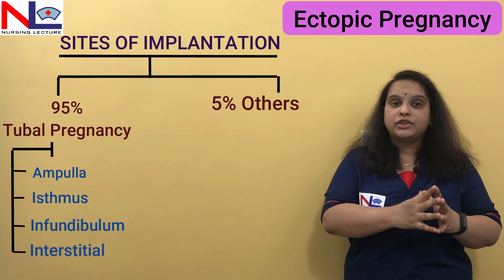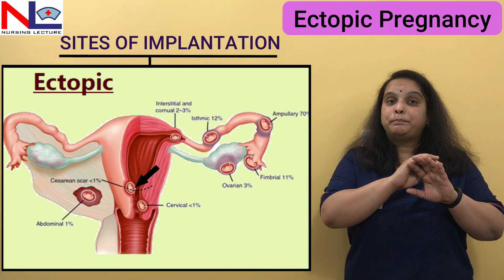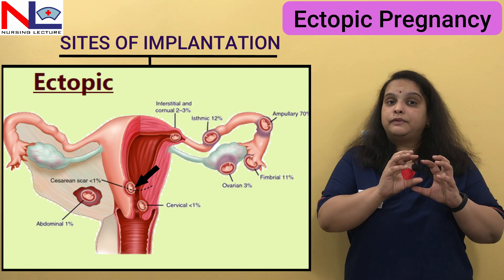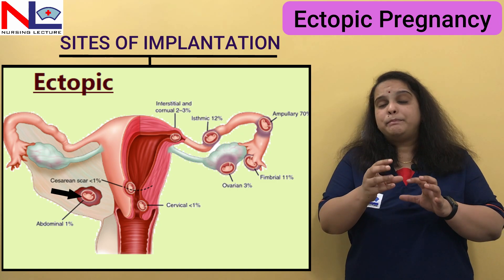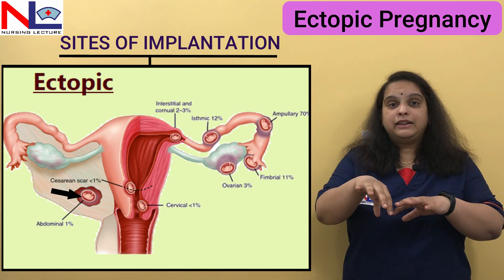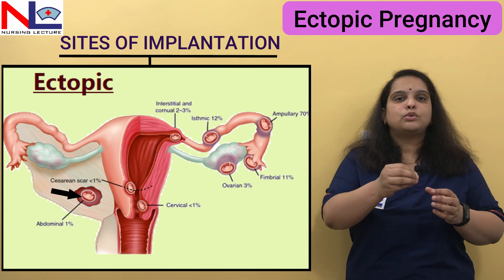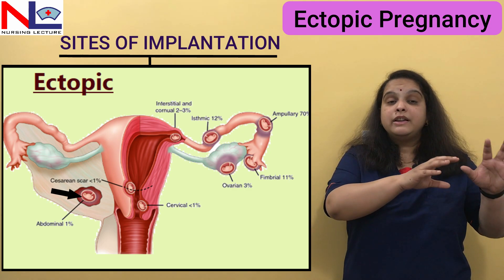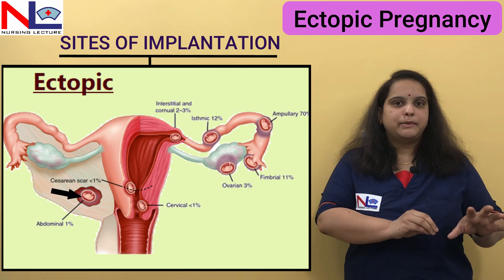In the remaining 5% of cases, the fertilized zygote can be implanted in the cervical region, or in a previous uterine scar — for example if the woman had a previous cesarean section. The zygote can also implant in the ovaries or travel into the peritoneal cavity. Primary abdominal pregnancy, where the fertilized ovum travels directly into the abdominal cavity, is less common; secondary abdominal pregnancy — where the fertilized ovum first implants in the tube or ovary and then moves to the abdominal cavity — is comparatively more common.